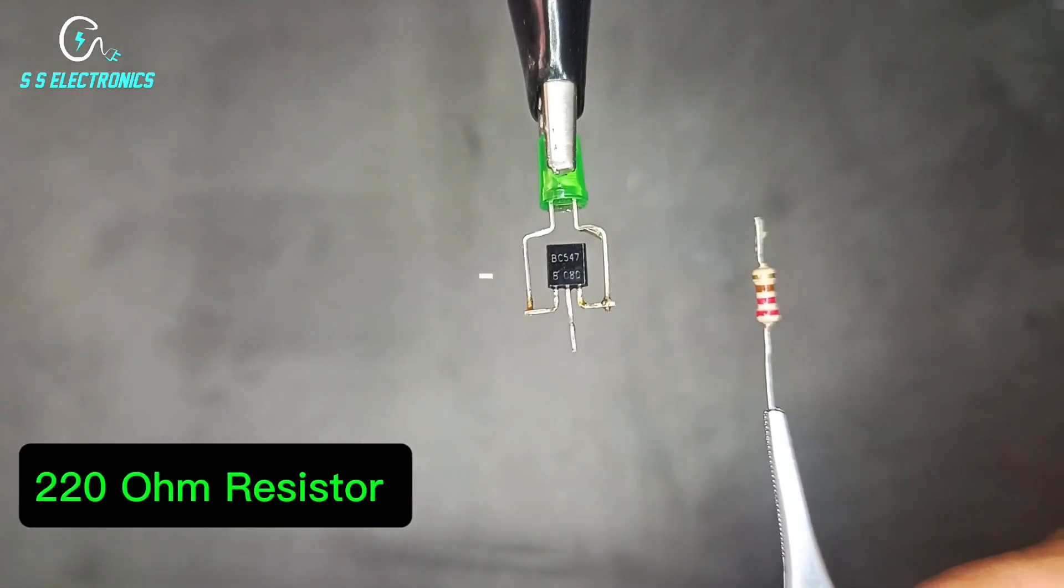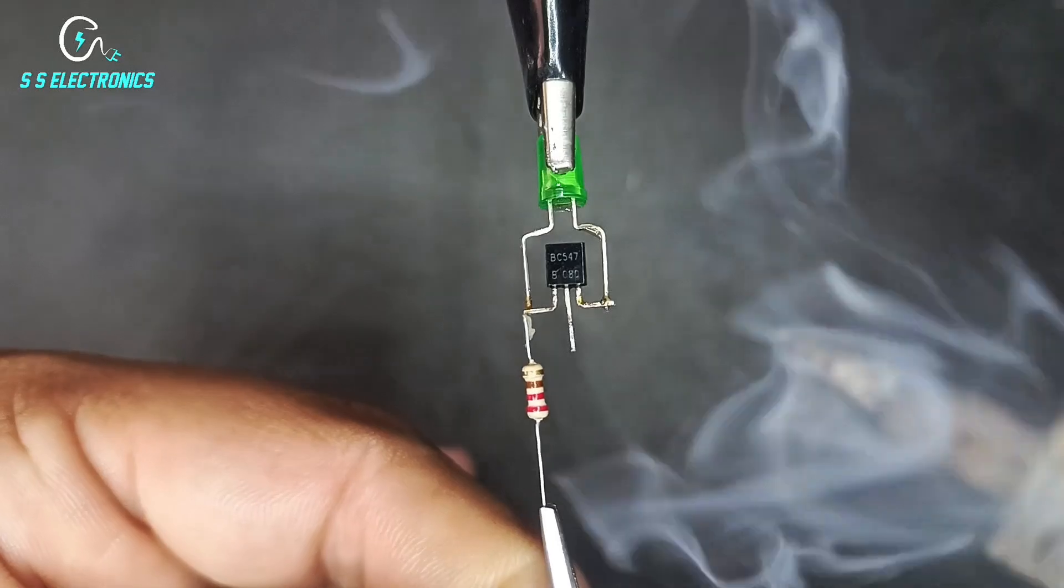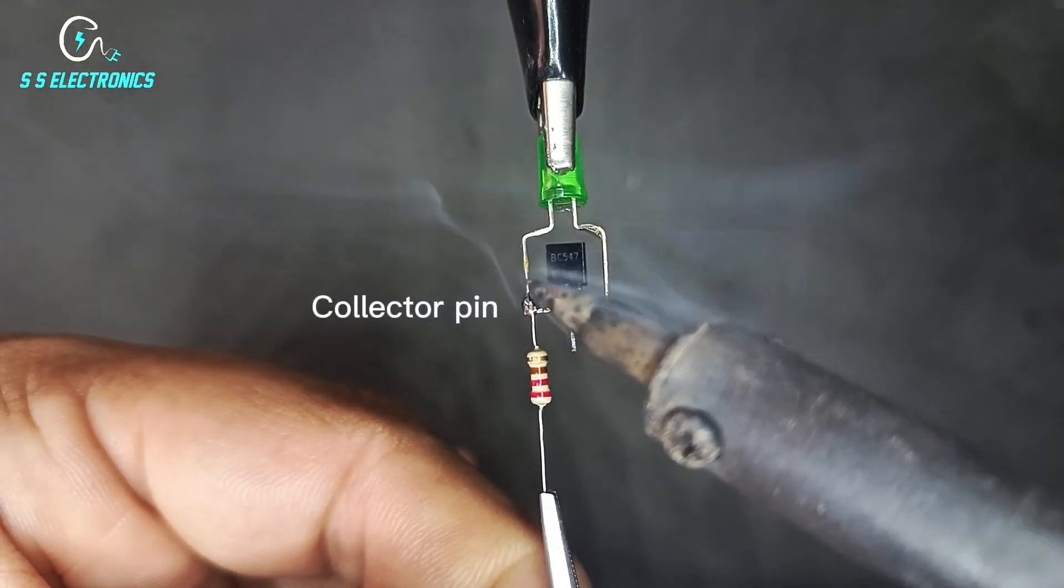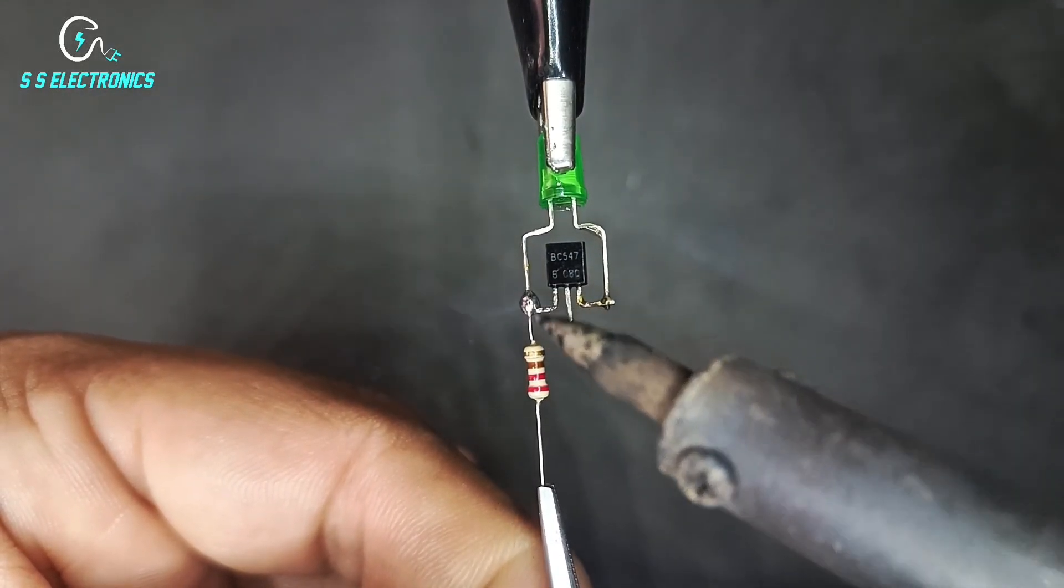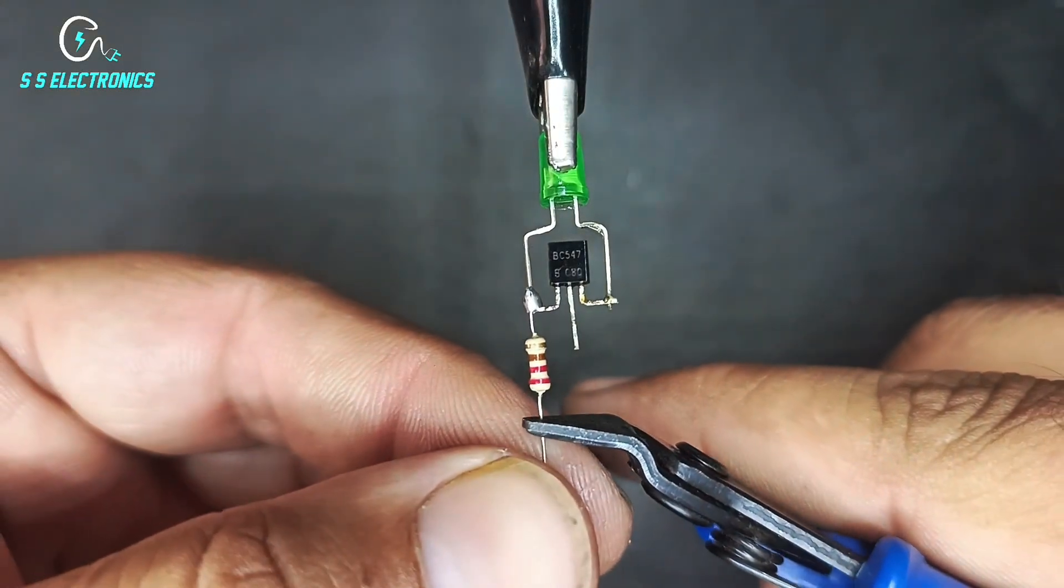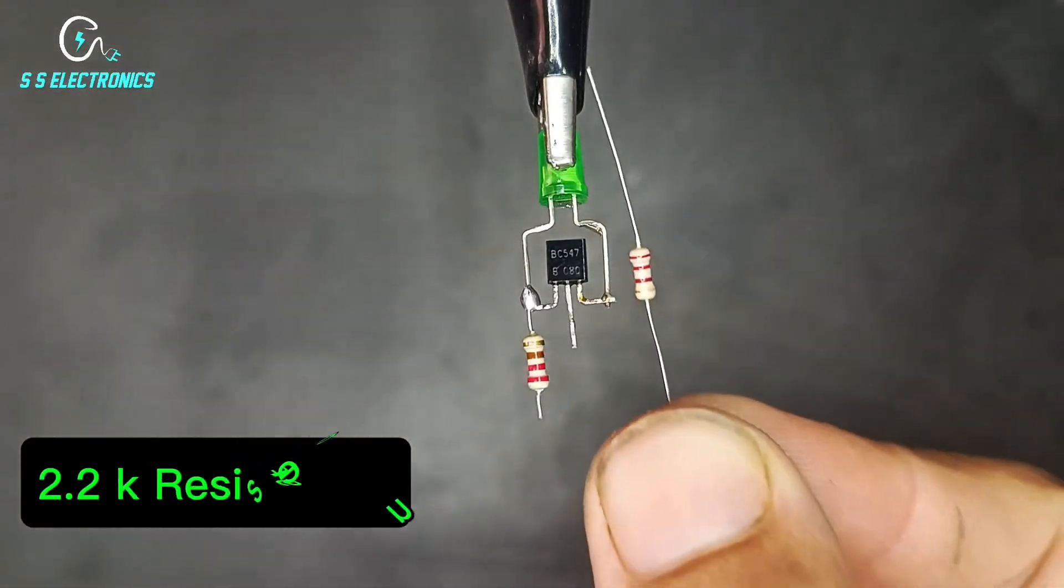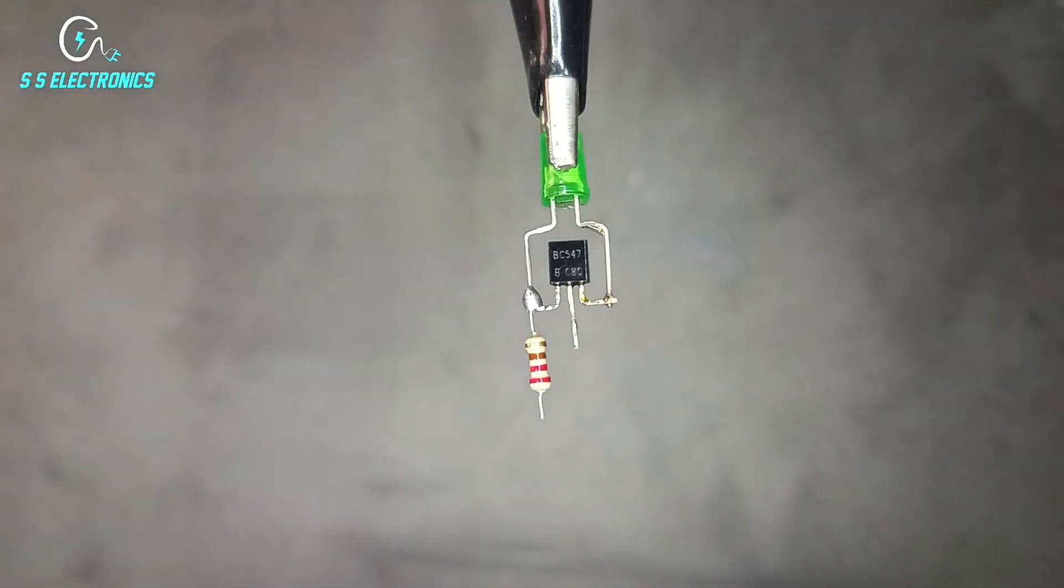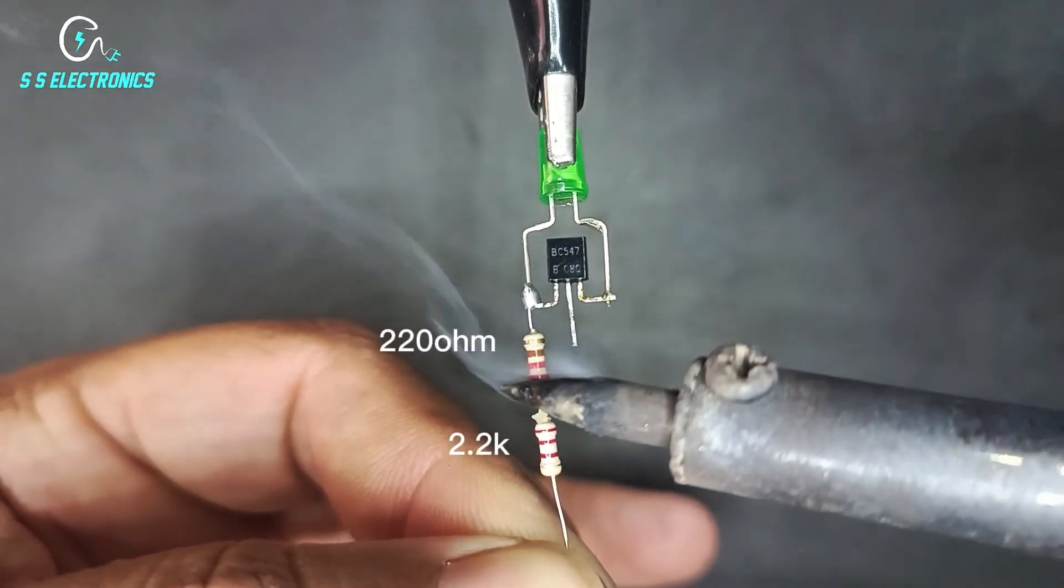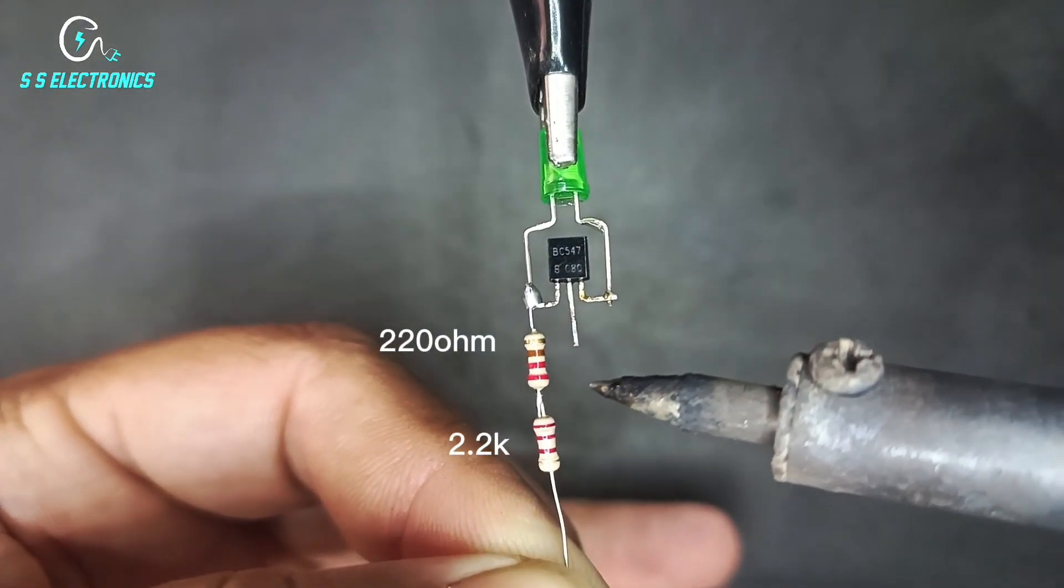220 ohm resistor. Resistance one side connecting with transistor collector pin. 2.2k resistance. 2.2k resistance connecting with 220 ohm resistance.